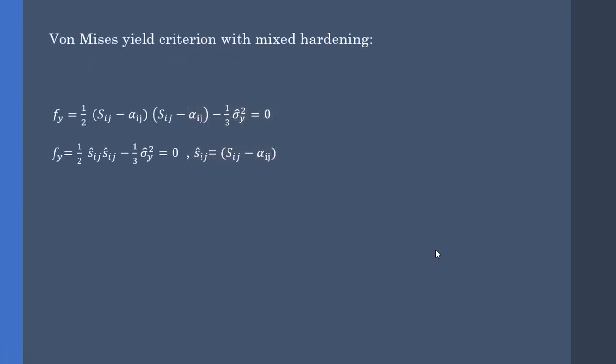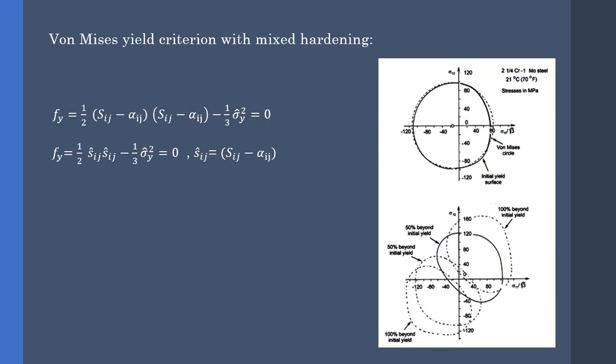Now the Von Mises criterion. The equation for the yield surface is as follows. As you can see it here. Note that the sigma hat differs from the simple yield stress obtained from the tensile test. Sigma hat depends on the equivalent plastic strain, which I will explain later.